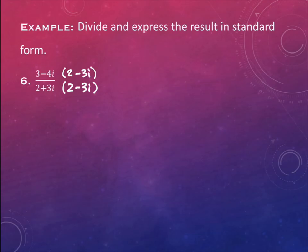This is a little bit more work than the last problem. What makes it more work? There's already an imaginary unit on the top — and not just that, there are two pieces on the top. I have subtraction of two pieces in the numerator, so I'm going to have to work a little bit more on the numerator than I did last time.